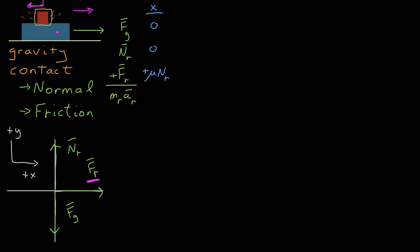So if we look in the x dimension, there's one force — the frictional force. The magnitude of that frictional force is equal to the coefficient of friction times the normal force of the blue on red. And from my free body diagram, that's pointing in the positive x direction.